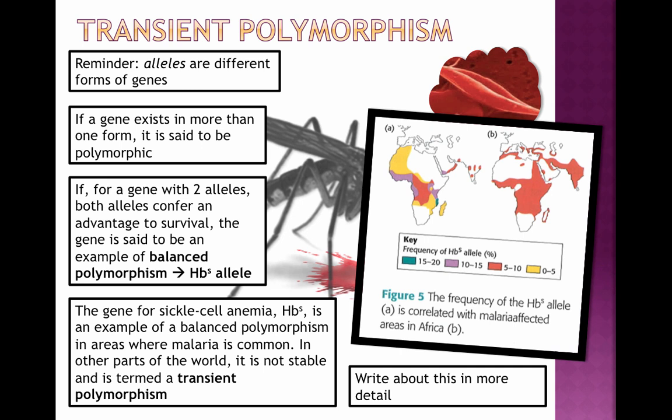In other parts of the world where malaria is not prevalent, the sickle cell allele causes more harm than good. In those regions it can be described as a transient polymorphism — it shows up occasionally but doesn't persist because it confers no survival advantage. This is a well-studied example of two different forms of a gene leading to natural selection and evolution, and the technical terms are transient and balanced polymorphisms.